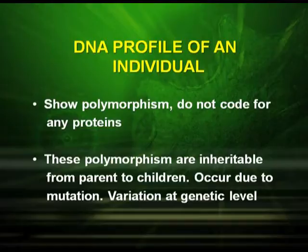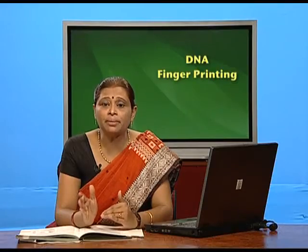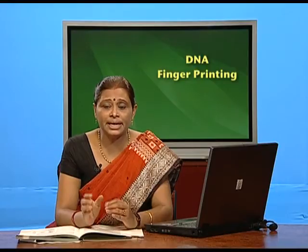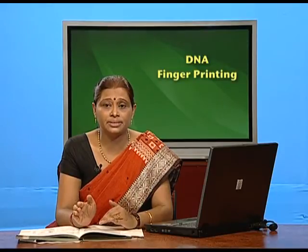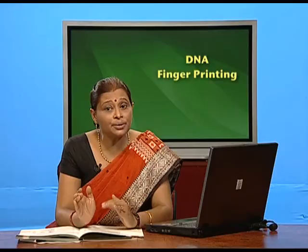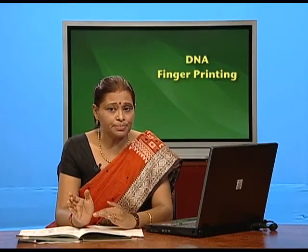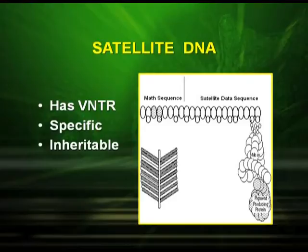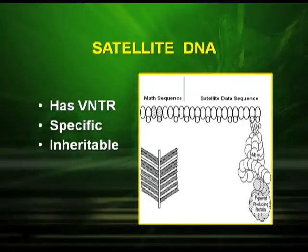The variation is at the genetic level. Polymorphism means that at these particular points — the repetitive DNA — there are variations in the base pairs, and these base pairs remain constant from parent to offspring. This repetitive DNA is also called satellite DNA. Satellite DNA has VNTRs — variable number of tandem repeats — which are specific and inheritable, as shown in the picture illustrating the satellite DNA sequence and how much it is coiled in the DNA.